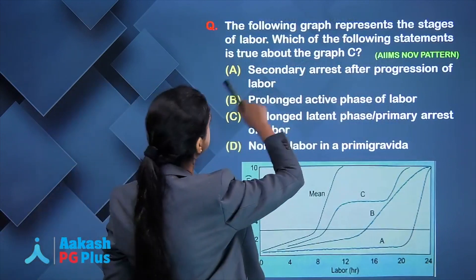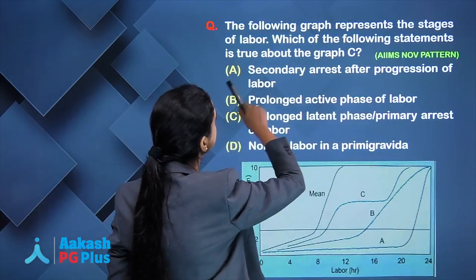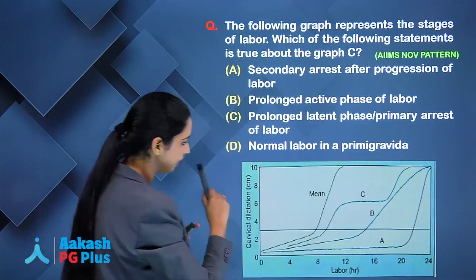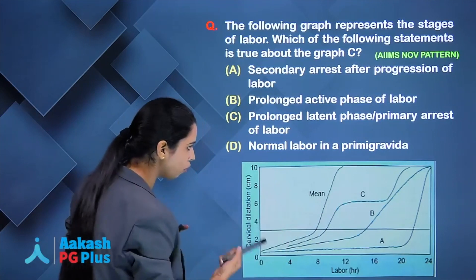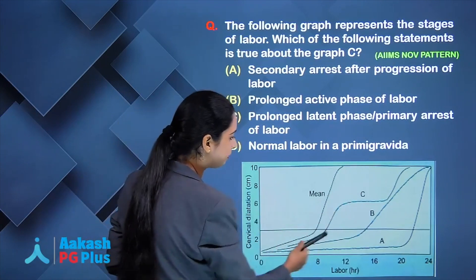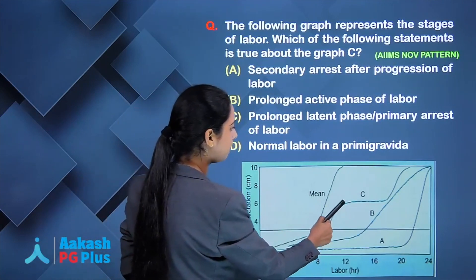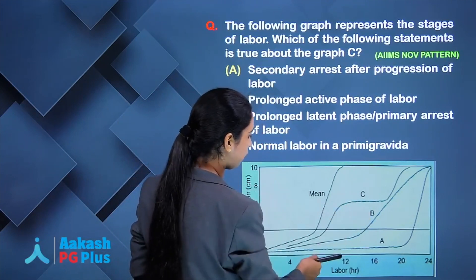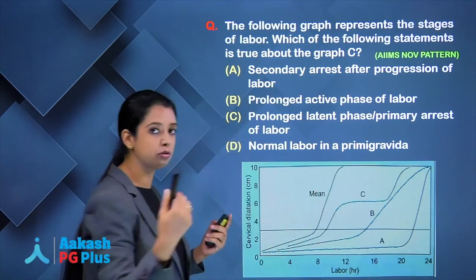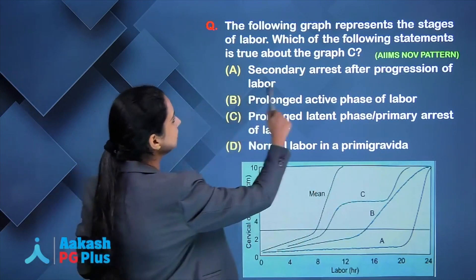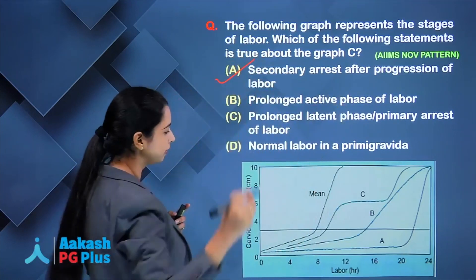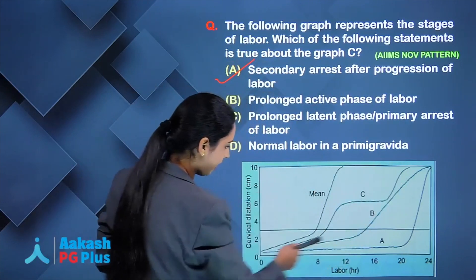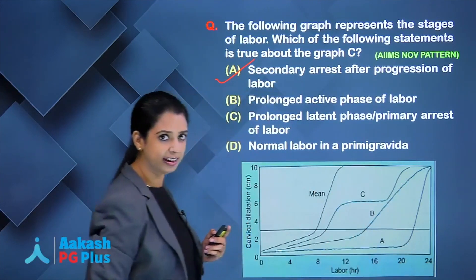Looking at graph C: the latent phase appears okay, progress in active phase started normally, but then came to an arrest — no change from 12 to 16 hours, meaning 4 hours of no progress. This is secondary arrest after progression of labour. Graph B represents prolonged active phase and graph A represents prolonged latent phase.